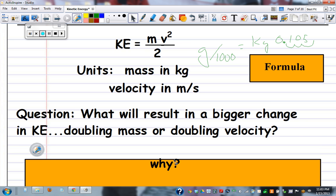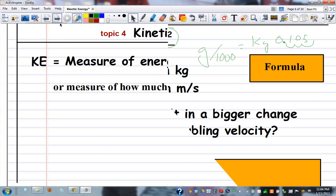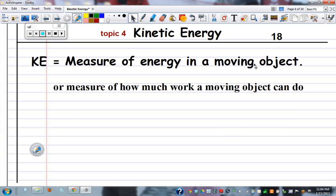And one question you'll have to ask is, given this formula, what will result in a bigger change in kinetic energy? Doubling the mass or doubling velocity? And why? And the bigger one is doubling velocity because velocity is impacted by the square. Which makes sense, because after all, kinetic energy is all about the energy in moving objects. So velocity is much more important in how much work a moving object can do.